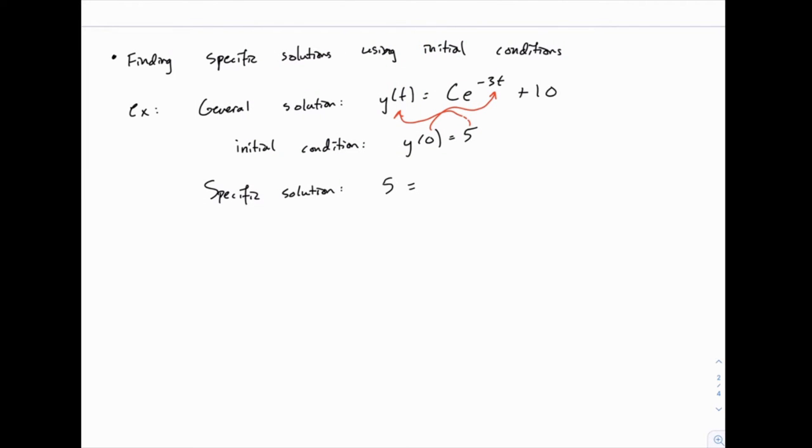This gives us 5 equals c e to the negative 3 times 0 plus 10. Notice that e to the power of 0 just equals 1, so 5 equals c plus 10, and pretty easily we can see that c equals 5, which means our specific solution is y equals 5 e to the negative 3t plus 10.